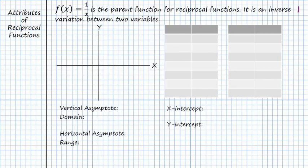All right, so f(x) equals 1 over x is the parent function for reciprocal functions. It is an inverse variation between two variables. And like we learned the other day, our inverse variation is going to follow a set pattern. So if we're going to graph this, what I'd like to do is I'd actually like to develop two tables here. So I'm going to develop a positive table and a negative table.